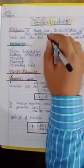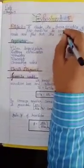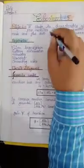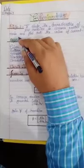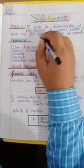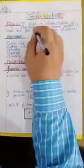Dear students, today I am going to demonstrate the experiment to study the characteristics of a PNP transistor in common emitter configuration and find out the value of the current gain beta.